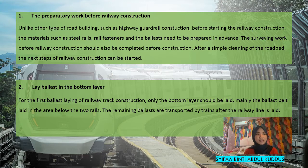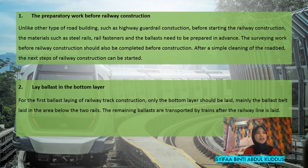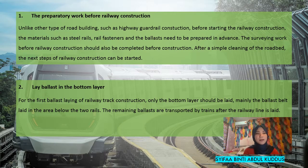The second step is to lay ballast in the bottom layer. For the first ballast laying of railway track construction, only the bottom layer should be laid — mainly the ballast belt in the area below the two rails. The remaining ballast is transported by trains after the railway line is laid.